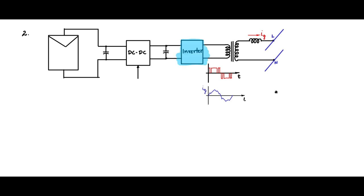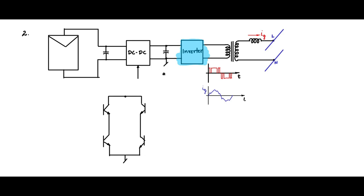Now let me look at how this inverter works. Take a single-phase inverter — I will draw the full-bridge circuit. I am using BJTs, but remember you can replace them with MOSFETs or IGBTs depending on the power and switching frequencies. The negative of the DC-DC converter connects to the bottom of the bridge and the positive to the top, forming the VDC bus or VDC link voltage at the inverter input. Reverse-conducting diodes are needed to provide freewheeling paths.